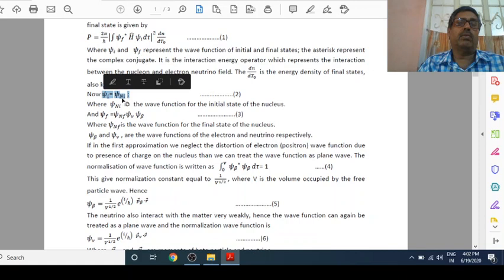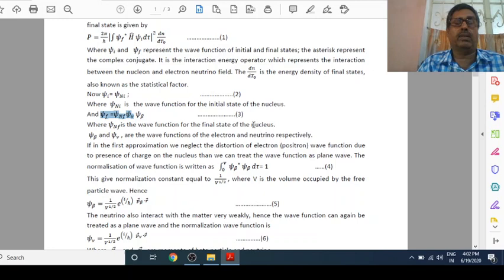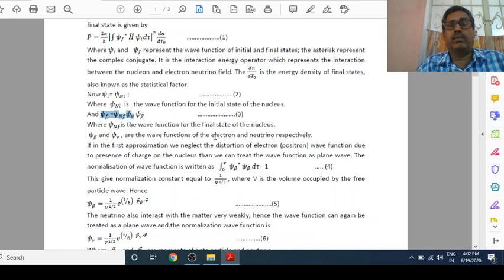Now, Ψ_i equals Ψ_ni, the wave function for the initial state of the nucleus. And Ψ_f equals Ψ_nf Ψ_ν Ψ_β, where Ψ_nf is the wave function for the final state of the nucleus, and Ψ_ν and Ψ_β are the wave functions of the neutrino and electron respectively.